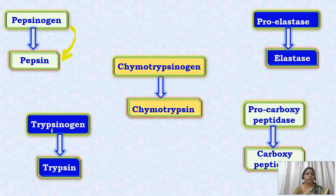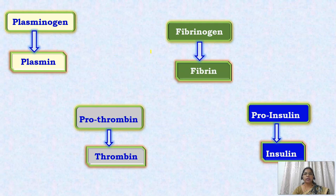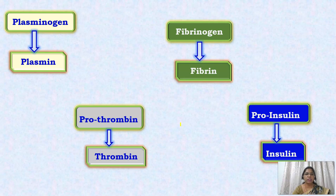Trypsinogen is converted into trypsin by enterokinase. Chymotrypsinogen is converted into chymotrypsin. Pro-elastase is converted into elastase, and pro-carboxypeptidase into carboxypeptidase. Plasminogen, fibrinogen, and prothrombin — blood clotting factors — are converted into plasmin, fibrin, and thrombin respectively. Pro-insulin is converted into insulin. All of these starting with 'pro' or ending with 'gen' are zymogens.